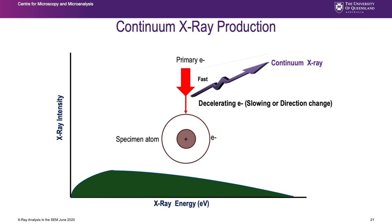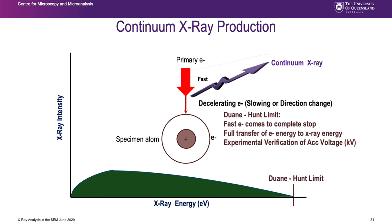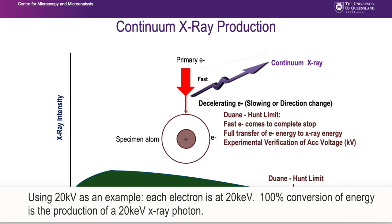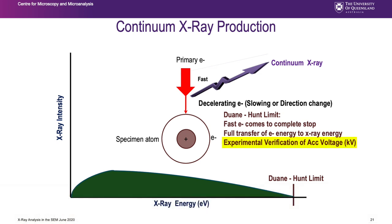What's important is the high-energy end of the spectrum, referred to as the Duane-Hunt limit. The maximum energy of an X-ray that can be produced is when an electron goes from full speed to a total stop - a 100% conversion of energy. If the accelerating voltage of the SEM is 20 kV, each electron is at 20 keV, and 100% conversion produces a 20 keV X-ray photon. So the Duane-Hunt limit is an independent experimental verification of the accelerating voltage as it lands on your specimen.